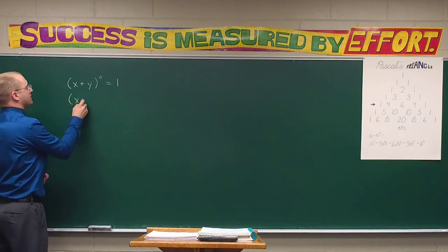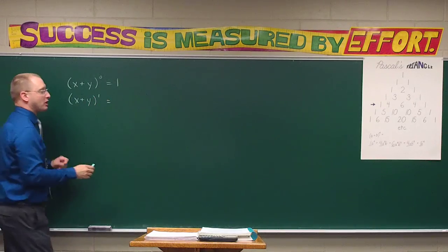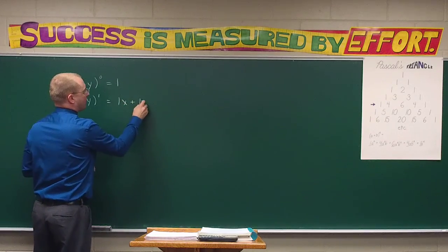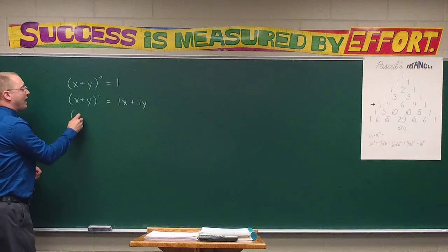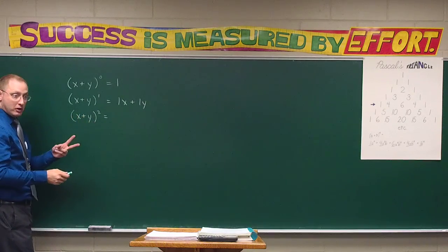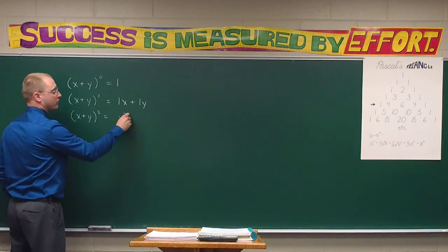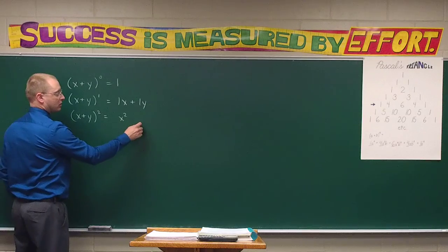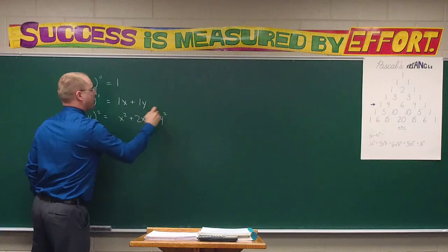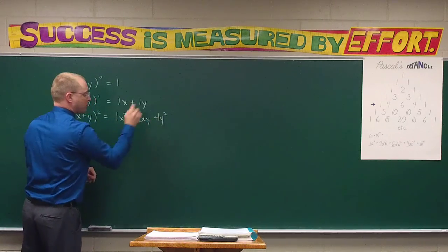If I were to raise x plus y to the first power, that would just be x plus y, because anything to the first is itself. But I'm going to write it differently: 1x plus 1y. If I were to square the binomial x plus y, we know we square the first, square the last, multiply and double. So we would get 1x squared plus 2xy plus 1y squared.